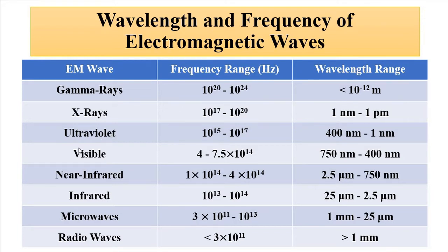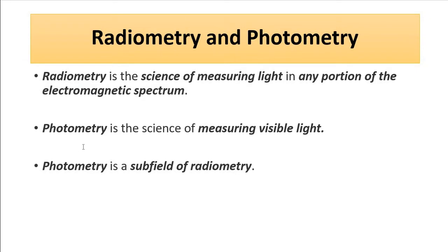Photometry is focused on a specific wavelength range, which is the visible wavelength range. This wavelength range is from 400 to 750 nanometers — in some cases 380 to 770 nanometers. This is the frequency range which is the focus of photometry. Photometry is the study of the visible spectrum of light, the visible light.